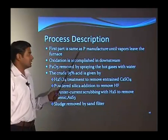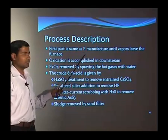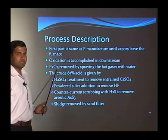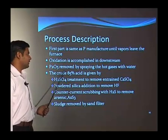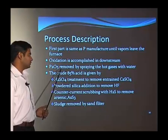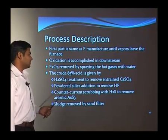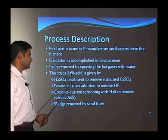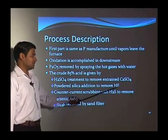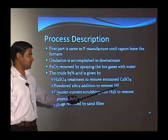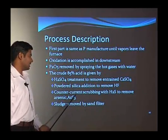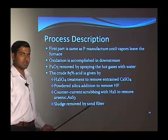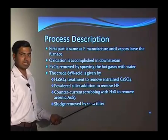We have seen the earlier process to manufacture elemental phosphorous. That is converted into the phosphorous pentoxide, and then with the help of water we convert it into phosphoric acid. Phosphoric acid is concentrated by means of sulfuric acid. Silica is added to remove the hydrofluoric acid in terms of hydroferrosilicates. Then counter-current scrubbing removes arsenic, which is a major impurity, and sludge is removed by sand filter.